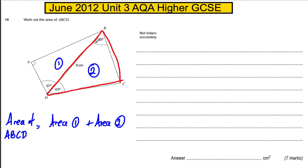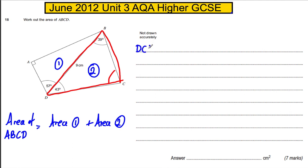Firstly, we have two of the angles in it, so we could clearly work this one out. I could state my working here: angle DCB must be 180 subtract 43 subtract 39, which is equal to 98. So this angle here is 98 degrees.